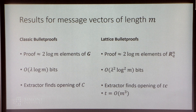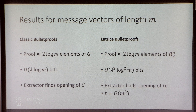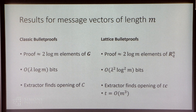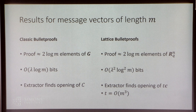What kind of proof sizes can we get? With classic bulletproofs, a prover can prove knowledge of an opening of commitment C to a message vector of length m using two log m group elements, giving proof size O(λ log m), where λ is a security parameter. With lattice-based bulletproofs, the proof sizes are roughly the square of those — I'll explain why later. Also, on the left the knowledge extractor finds an actual opening to the original Pedersen commitment, while on the right the extractor can only find an opening to some multiple T of the original commitment. I'll explain why and why it might not matter.